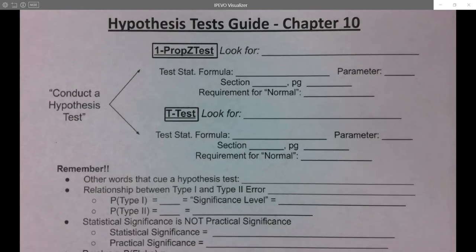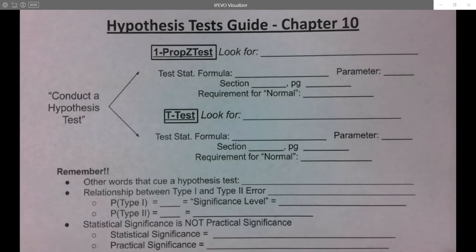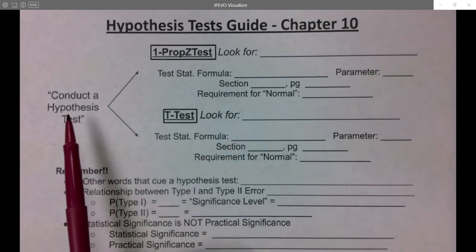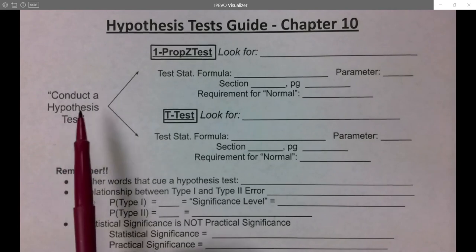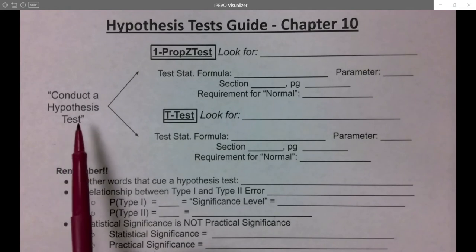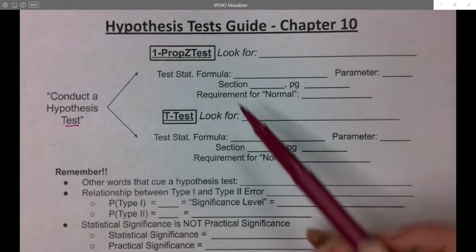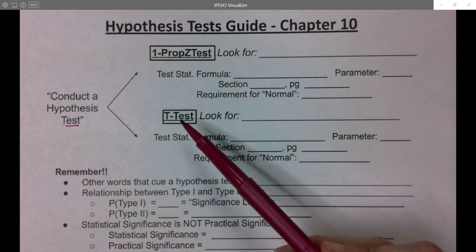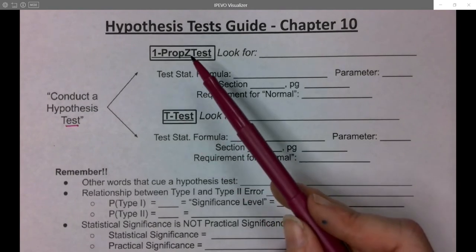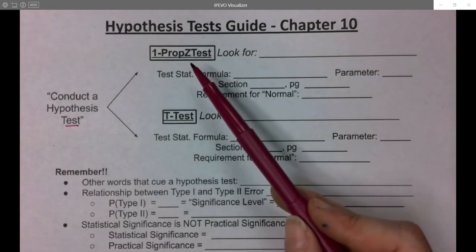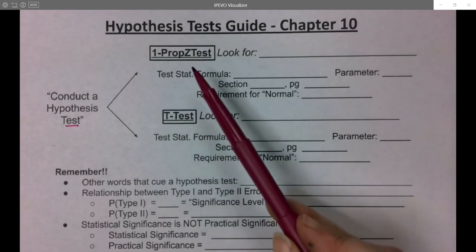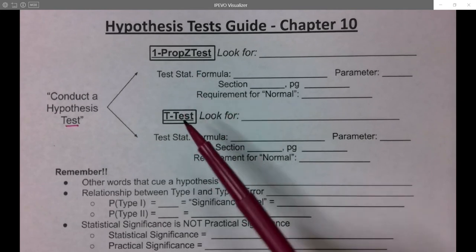Hello Math 133 students. In this video I'm going to be going over the hypothesis test guide, which is the new flowchart for chapter 10. In chapter 10, our big instructions are going to be to conduct a hypothesis test or test a value. So if you see the word 'test' in there, that's kind of a sign. For us there's only two options: we'll either be testing the proportion or testing the mean. Everything we do is proportions or means.